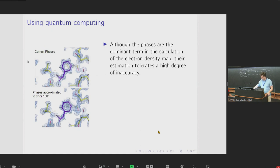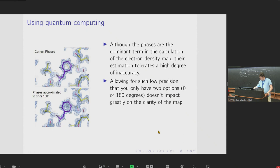It turns out that the phases are the most important term in the calculation of the electron density map. However, it's also the case that their estimation tolerates quite a high degree of inaccuracy. So, for example, even reducing the precision to the point that you only have two options for the phase values can still produce a map that's interpretable. So these two figures here demonstrate this.